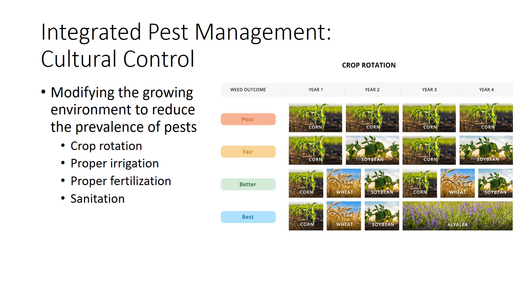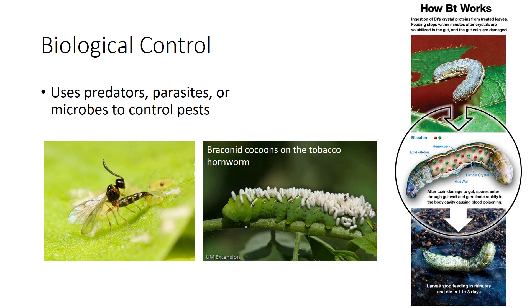Sanitation is the removal of dead and diseased plant debris that harbors insects and disease organisms. Biological pest control uses living organisms such as predators, parasites, and microbial organisms to control pests. A variety of beneficial insects provide excellent forms of biological control for insect species that have an adverse effect on horticultural crops. An excellent example of a microbe is the bacterium Bacillus thuringiensis. When released into the fields, these bacteria kill various species of caterpillars and beetle larvae. Plants are currently being genetically engineered with the Bt gene.